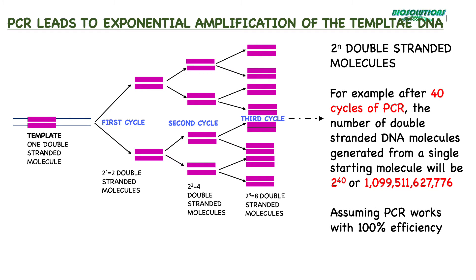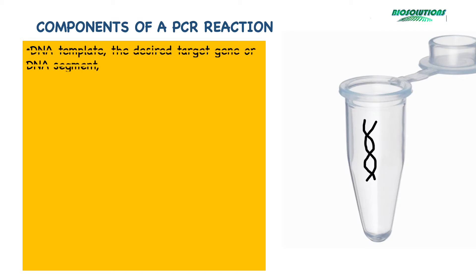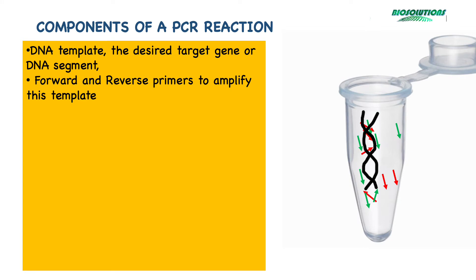To assemble a PCR reaction, what reagents or components are required? First of all, the DNA template, which is the desired DNA segment or gene of interest we wish to amplify. Next, the forward and reverse primers to amplify the template. The primers are short synthetic sequences of DNA which are complementary to the coding and template sequences of the DNA template we are amplifying. They anneal to the corresponding single-stranded DNA sequence of the template after the denaturation step and provide a 3'OH group for the DNA polymerase to extend it into a new DNA strand.